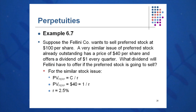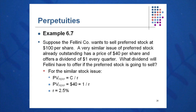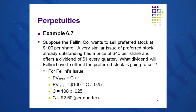Here's a good example. Fellini Company wants to sell preferred stock at $100 a share. A similar share issue goes for $40 a share and pays a dividend of $1 every quarter, or $4 a year. What will this preferred stock dividend have to be to be equivalent? The rate is c over r: $40 over r gives a rate of 2.5%. Multiplying that rate times the $100 share issue gives $2.50 per quarter, or $10 per year.